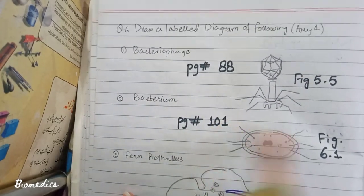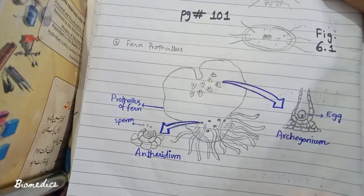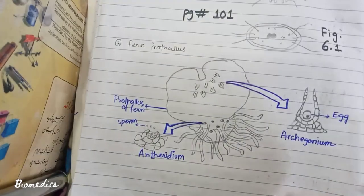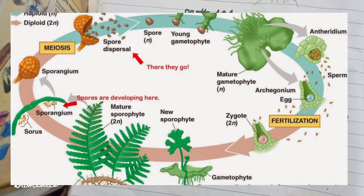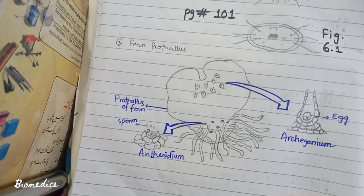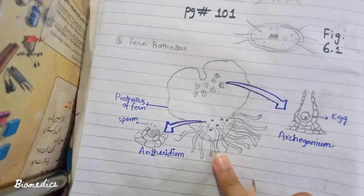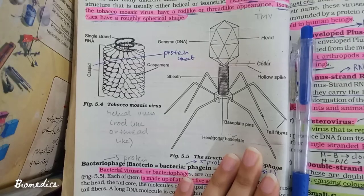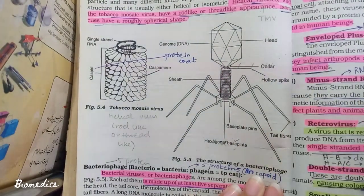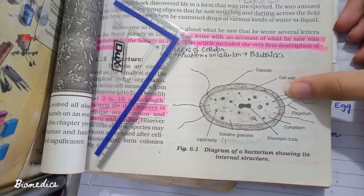The last question is about the fern prothallus and its life cycle. A diagram has been drawn and will be pasted in the video. An unlabeled diagram will also be placed in the description so you can see it. The figure from the book is shown, and practicing this diagram is recommended.